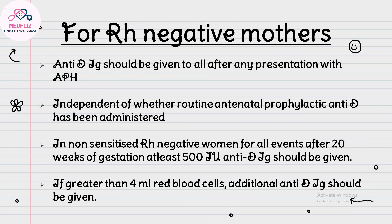Anti-D immunoglobulin should be given to all patients after any presentation with APH, independent of whether routine antenatal prophylactic anti-D has been administered. For a non-sensitized RH-negative woman, for all events after 20 weeks of gestation, at least 500 international units of anti-D should be given. If greater than 4 ml of fetal blood cells are present, additional anti-D should be given. One ml of blood loss is covered by 125 international units of anti-D.